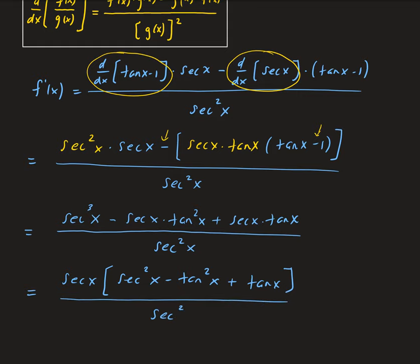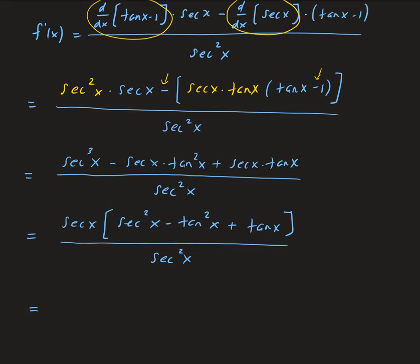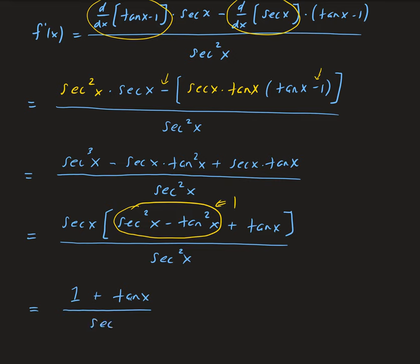This is all divided by secant squared x. The secant squared x in the denominator will cancel with the secant x we factored out, leaving a secant x in the denominator. Also, secant squared x minus tangent squared x is a trig identity equal to 1. So we get 1 plus tangent x, all divided by secant x.